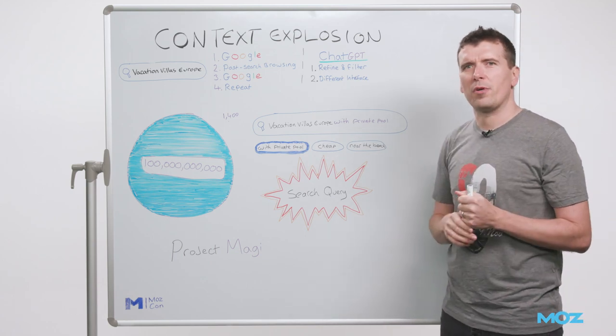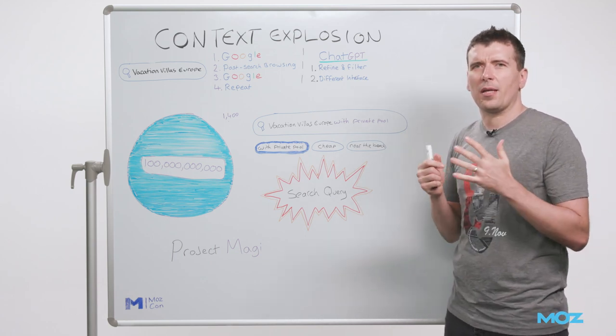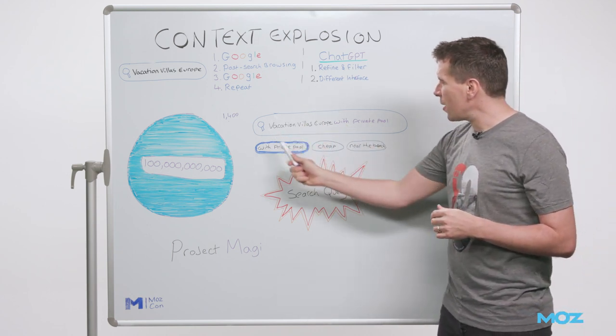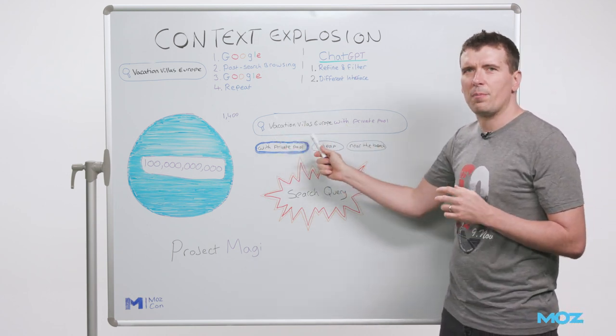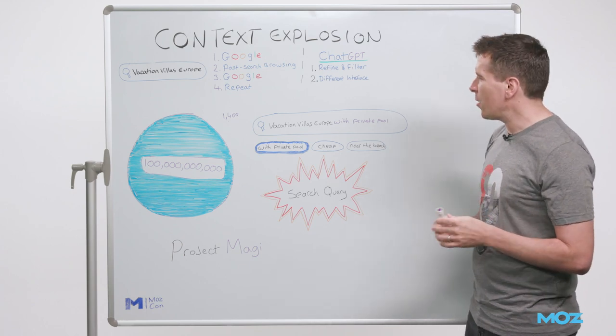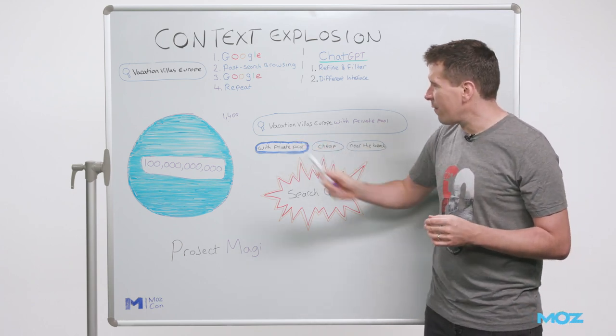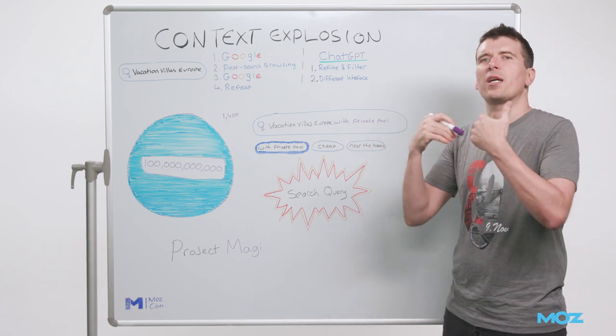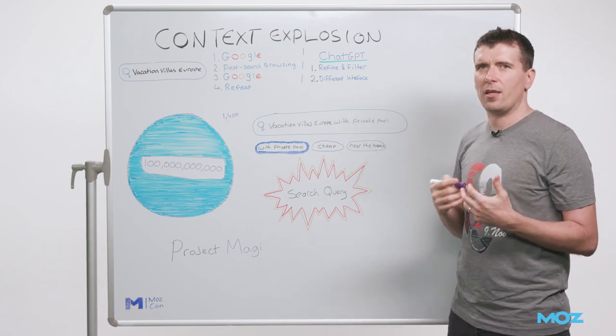And so for my MozCon presentation, I predicted that they were going to add some sort of faceted search functionality. And then a couple of months ago, they launched these filter bubbles right in the main search interface. And so you do a search, if you press one of the filter buttons, it basically extends your search, adding more explicit context into that query.